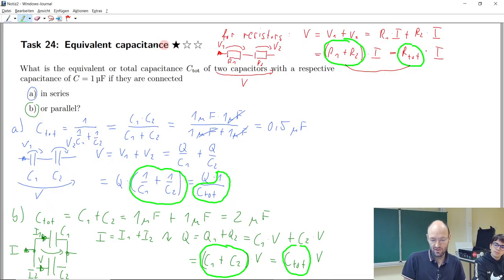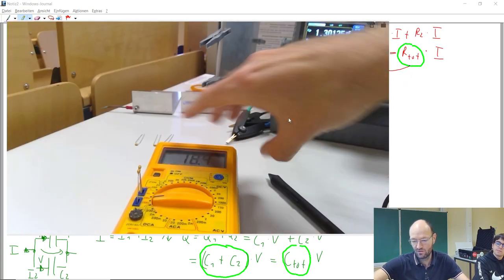Which somehow makes sense. So that's exactly what we calculated before. If you calculate total capacitance of series connections, if you have two equal capacitances, total capacitance will decrease, will be half of it.